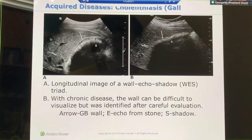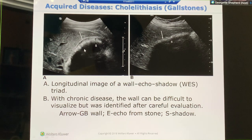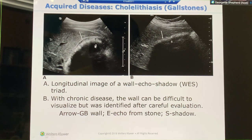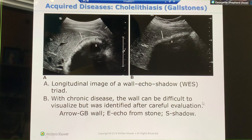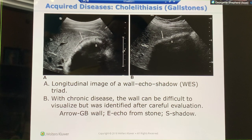This is the WES sign. I see a wall, I see an echo, and I don't see anything past the echo. Wall, echo, shadow. We call it the WES sign. It is on the registry.